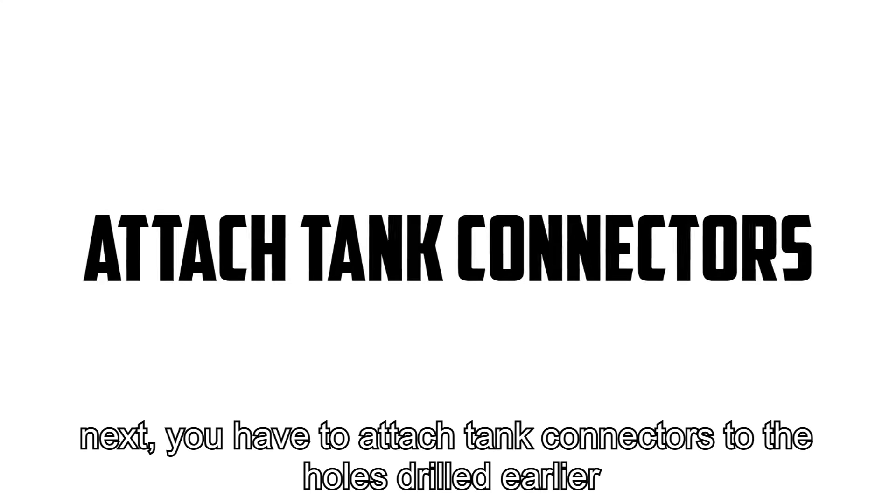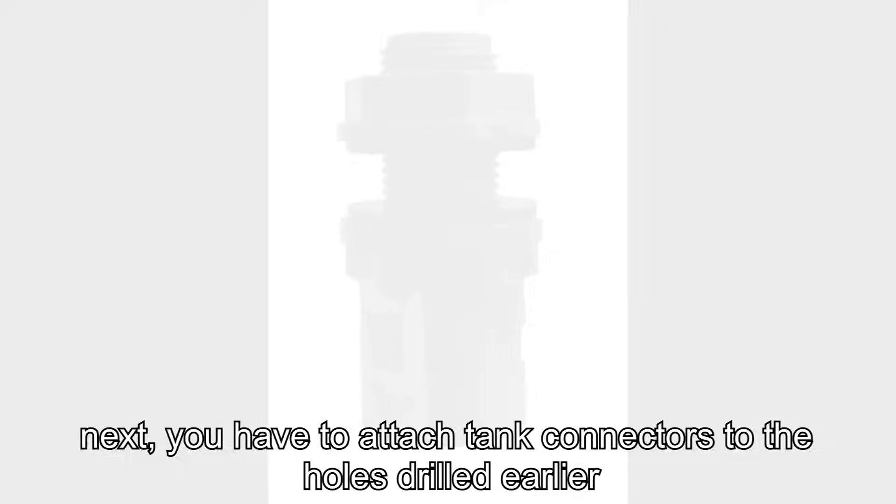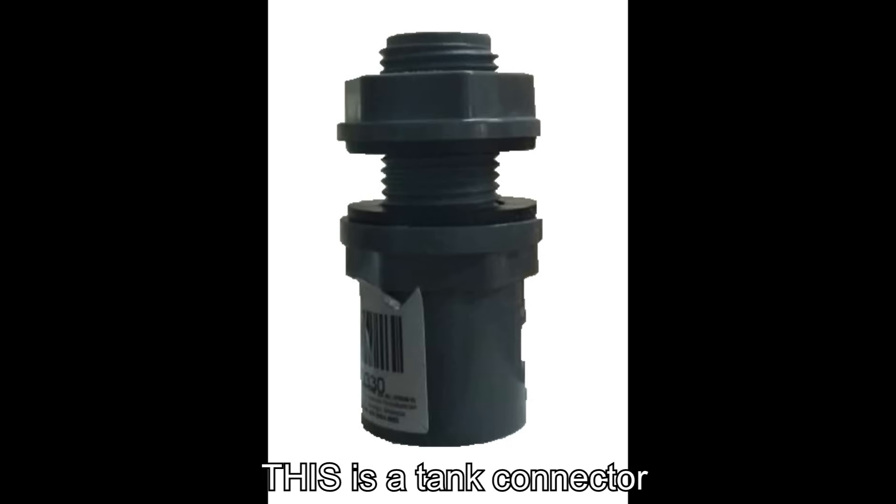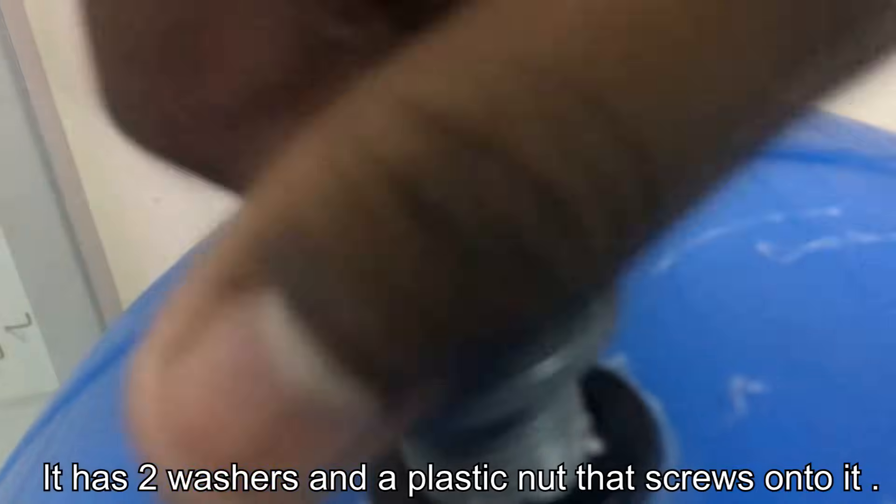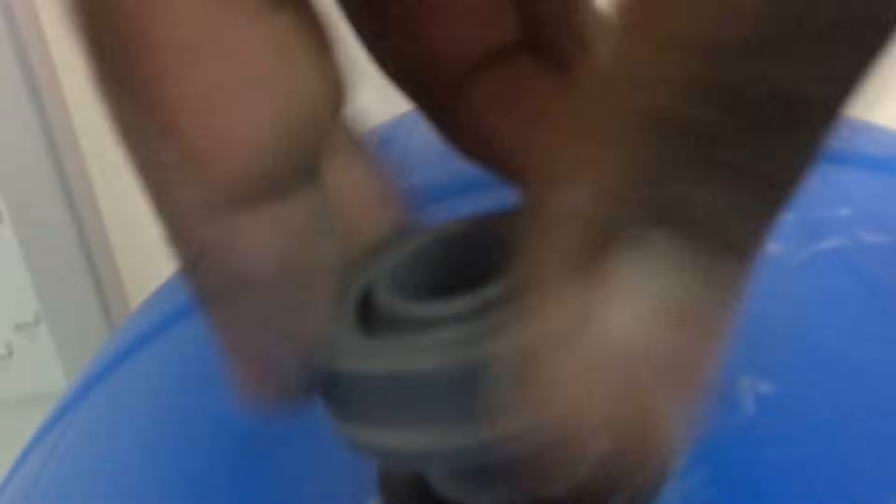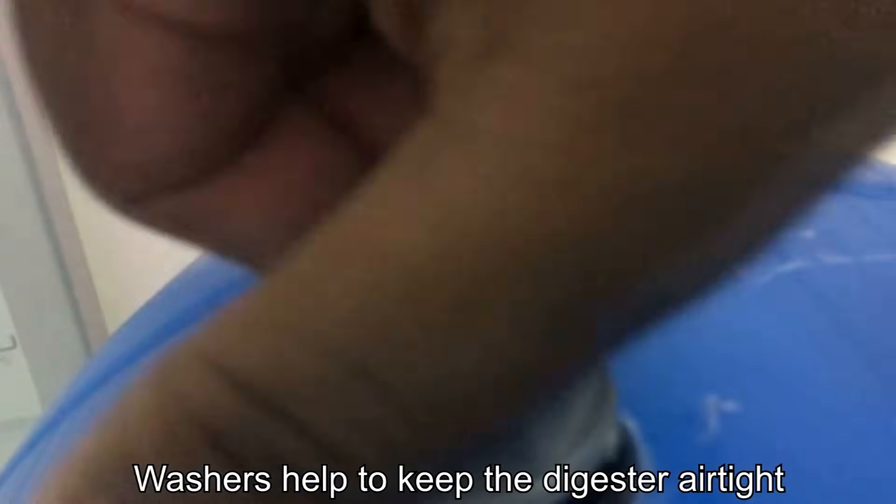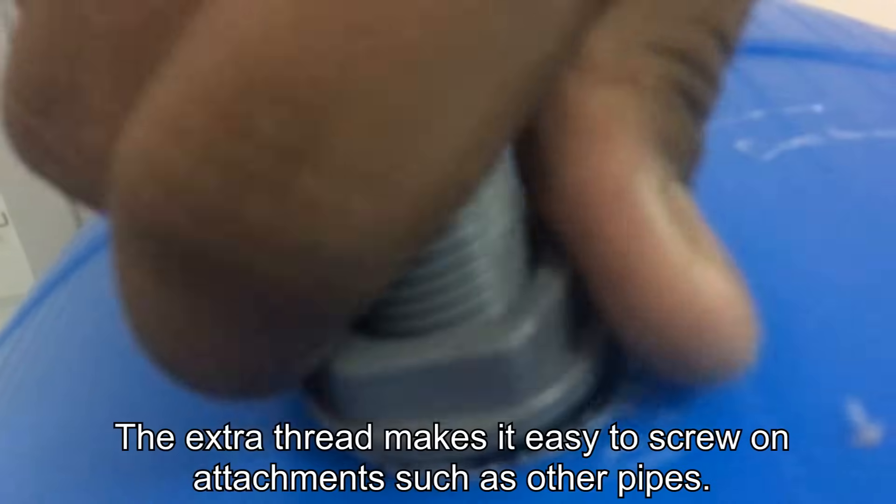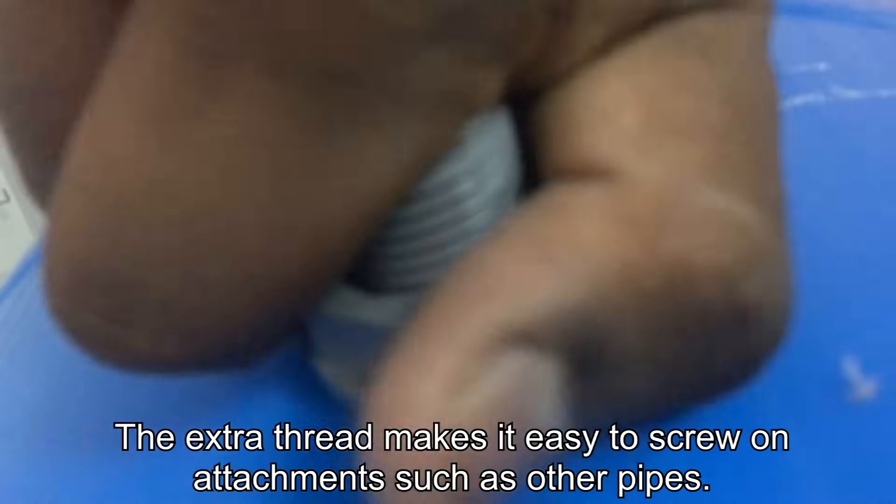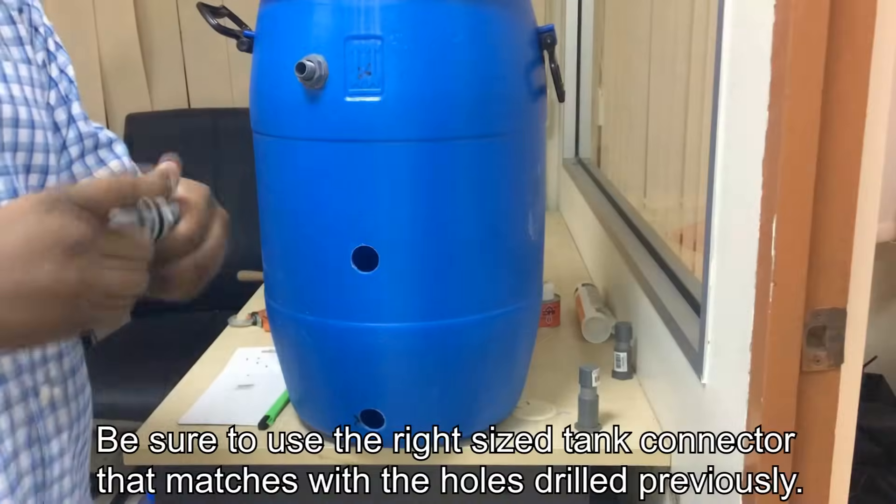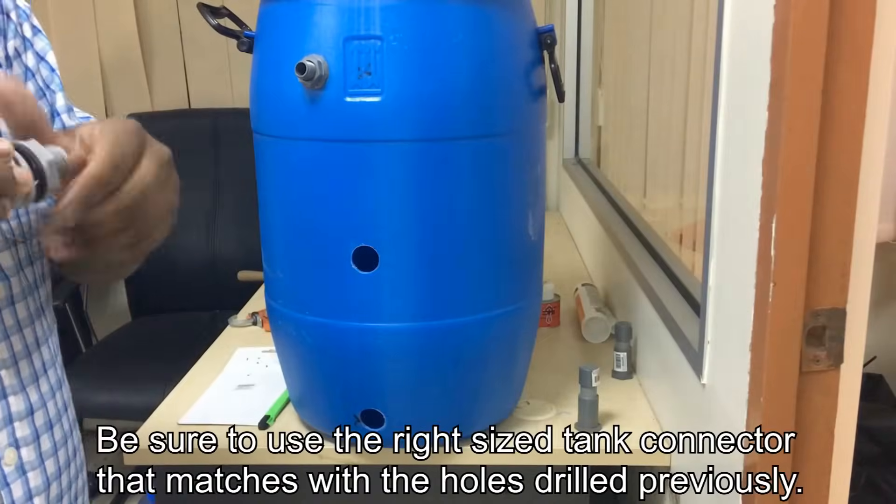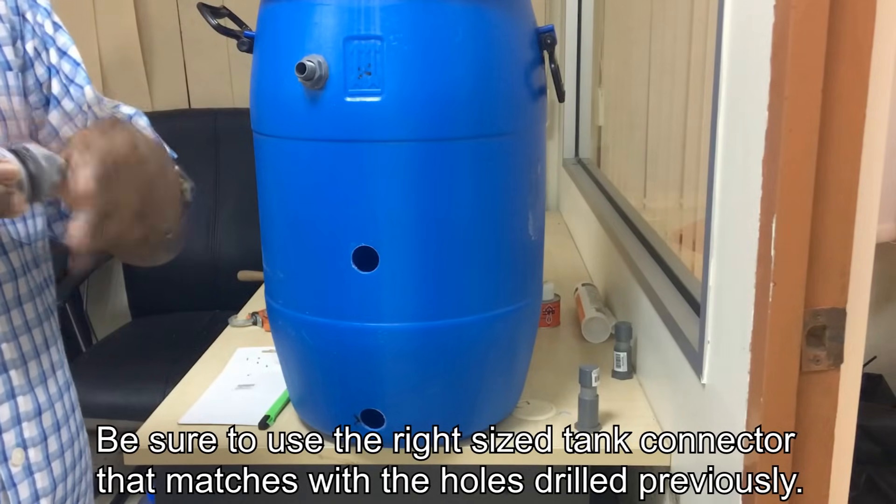Next, you have to attach tank connectors to the holes drilled earlier. This is a tank connector. It has two washers and a plastic nut that closes onto it. Washers help to keep the digester airtight and the nut helps to keep it secure. The extra thread at the end makes it easy to screw on attachments such as other pipes. Be sure to use the right size tank connector that matches with the holes drilled previously.